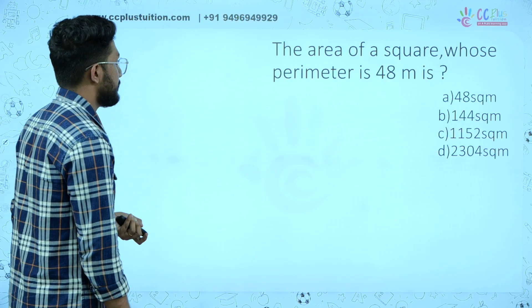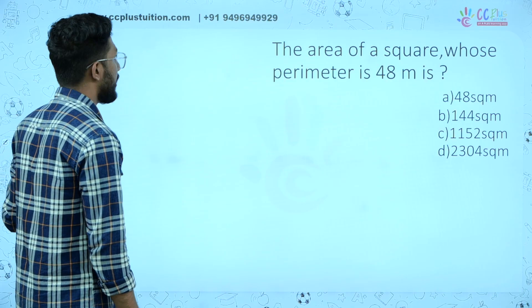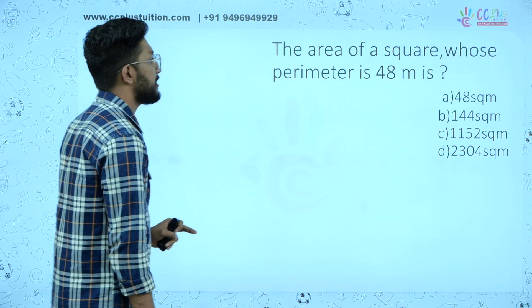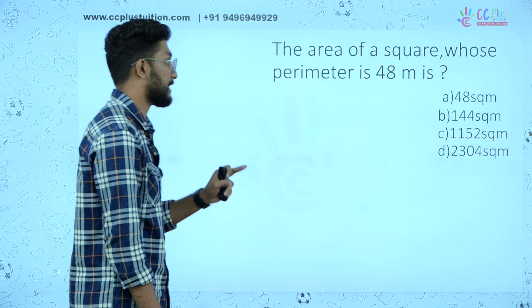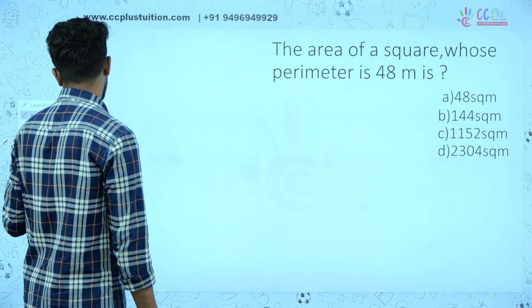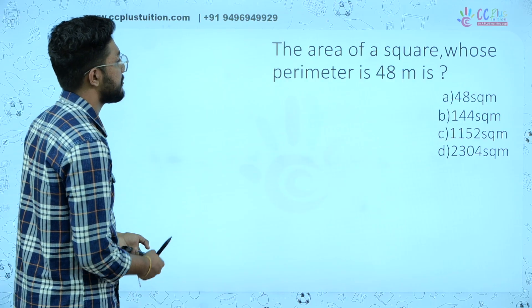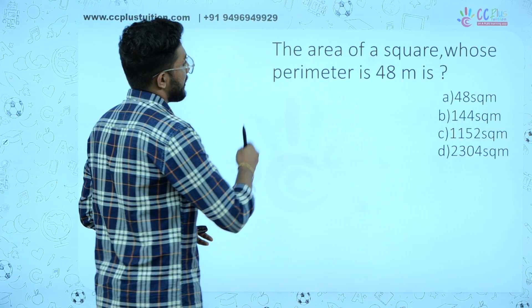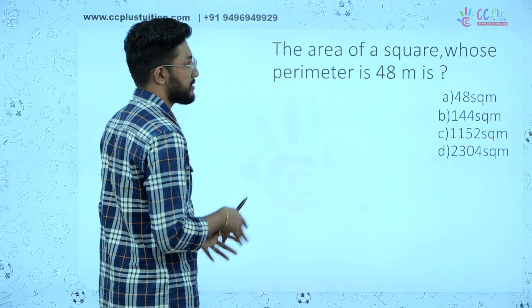Question 5: The area of a square whose perimeter is 48. Perimeter of the square is 48 meters.